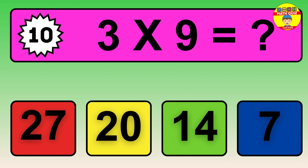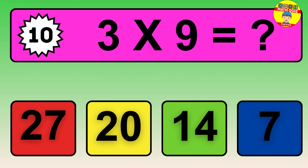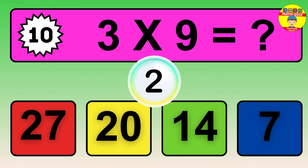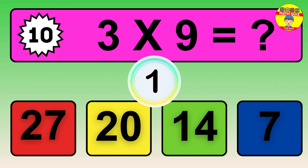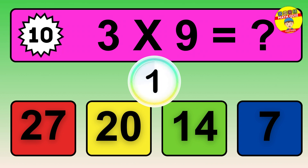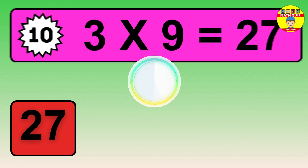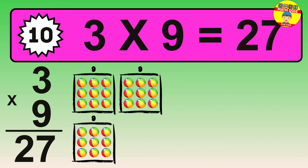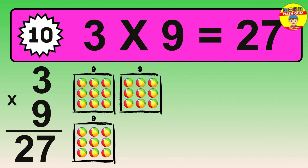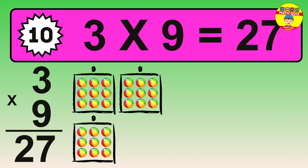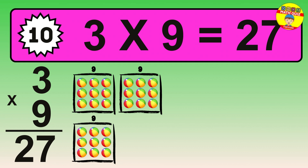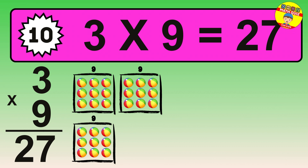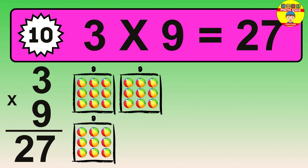Question 10. 3 times 9 equals what? The answer is 3 times 9 is 27. To calculate, we have 3 groups with 9 balls each one. So, how many balls do we have? 27 balls.